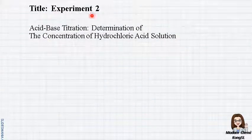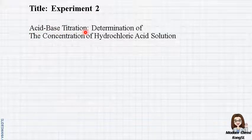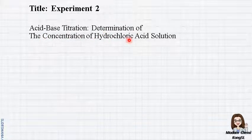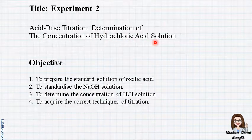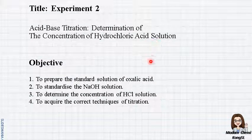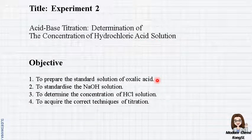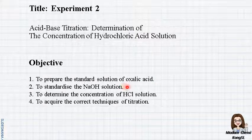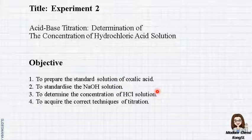Experiment 2. The title is Acid-Base Titration: Determination of the concentration of hydrochloric acid solution. There are a few objectives. First, we must know how to prepare the standard solution of oxalic acid. Second, to standardize the sodium hydroxide solution. Third, to determine the concentration of hydrochloric acid solution.